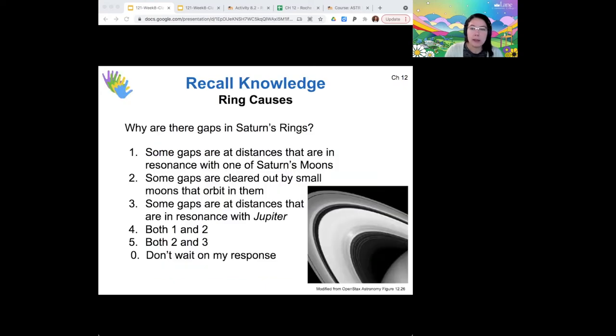Based on your reading, see if you recall why those gaps form. Yeah, so I see a lot of votes for four, quite a few for one. So yeah, indeed, some of those gaps are in resonance with Saturn's moons, and so I'll talk about that in a little bit more detail in a second. And some of the gaps are cleared out by small moons that orbit within those gaps. So both one and two are specific reasons. Let's see, this little gap here is called the Encke gap, and that one is cleared out by the moon Pan. So that's one example.